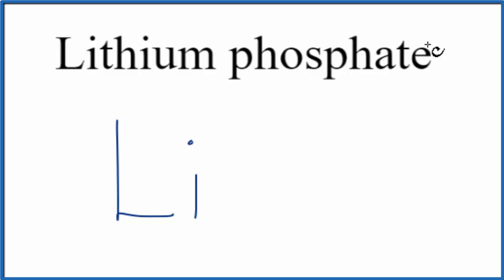Phosphate, you won't find that on the periodic table. When you see Ate at the end of a compound here, you're thinking that it's a polyatomic ion.